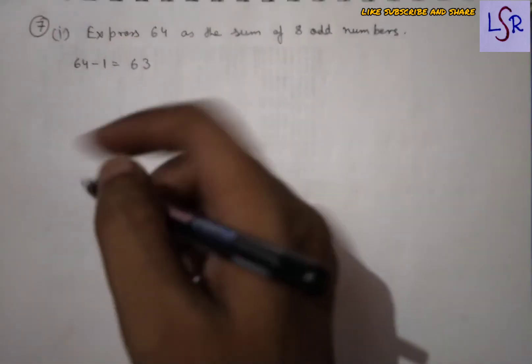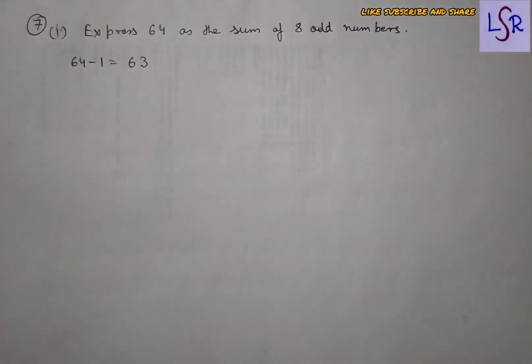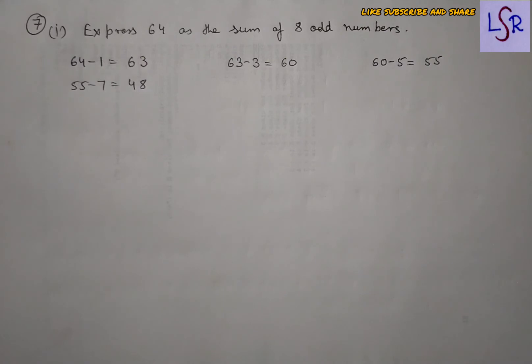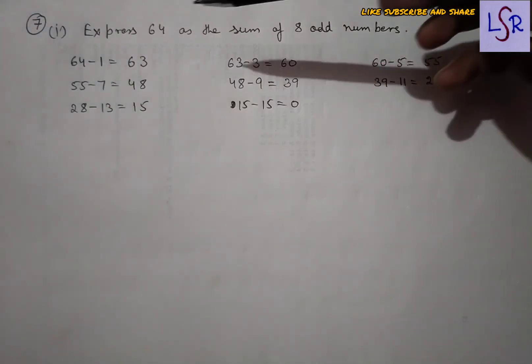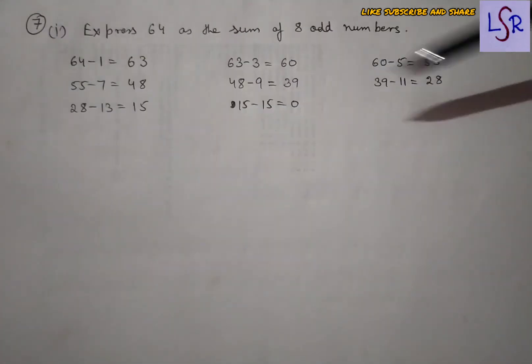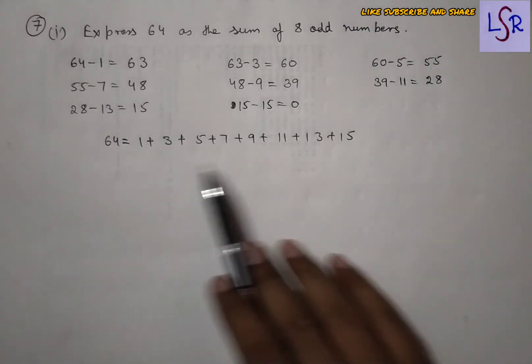In Question 7, we express 64 as a sum of 8 odd numbers. We start by subtracting 1 from 64, then subtract 3, then 5, then 7, and continue with successive odd numbers until we reach 0. We subtracted 8 times in total, confirming 64 = 1+3+5+7+9+11+13+15, the sum of 8 odd numbers.